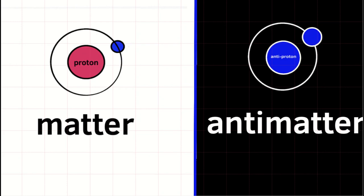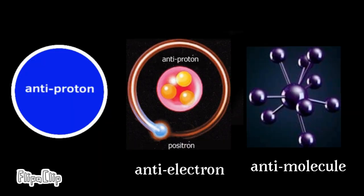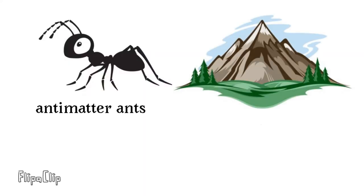Since antimatter particles are essentially identical to regular matter, other than the opposite charge thing, they can combine together in essentially identical ways to form antiprotons, anti-atoms, anti-molecules, and in principle anything from anti-ants to antimatter mountains.